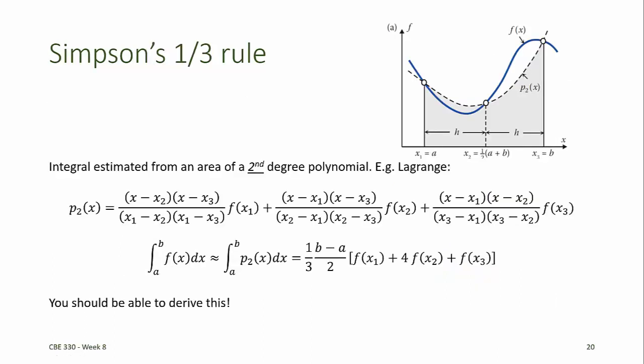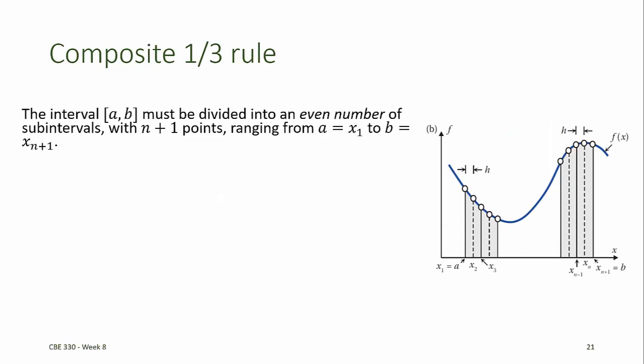The Newton-Cotes formulas extend this method to higher-order polynomials. We've already looked at the rectangle rule, which requires just one data point, and the trapezoid rule, which requires two data points. Simpson's one-third rule estimates an integral from the area of a second-degree polynomial formed from three data points. That polynomial might be formulated from the Lagrange interpolating polynomial or the Newton interpolating polynomial. Because the integral of a polynomial is easy to compute, polynomial approximation is the general method for all Newton-Cotes formulas. Simpson's one-third rule can also be implemented in a composite form.